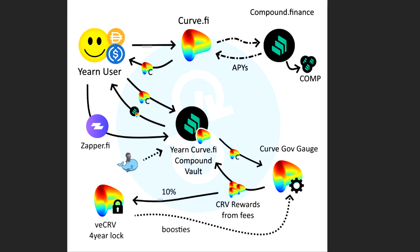Now what will they do with the rewards? They're going to take 10% of them and stick them into veCRV — a four-year lock governance thing. By locking up some of these Curve tokens here, it's going to boost the rewards, making them larger and bigger. So that's why they put 10% over here — because it's kind of locked away, but it makes the strategy more powerful and gives more rewards the next time.